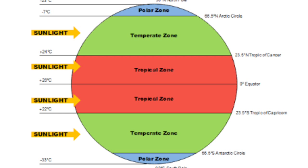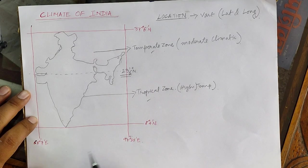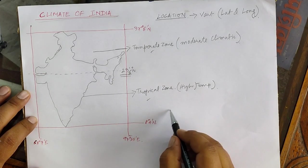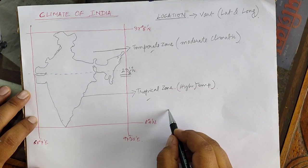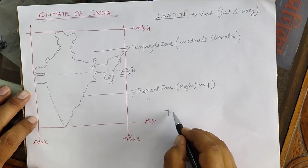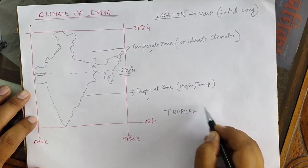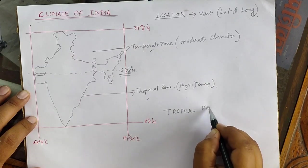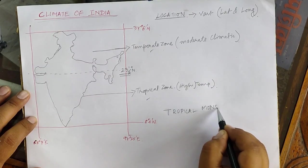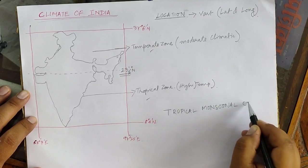For your better understanding, I have provided you an image of the different heat zones of the world. In our country we have various types of climatic conditions, but the overall type of climatic condition is termed as a tropical monsoonal climate.